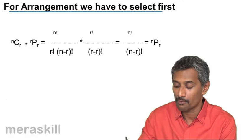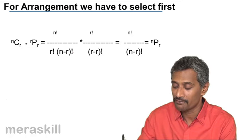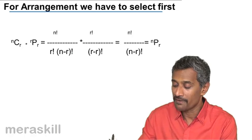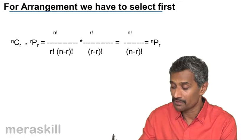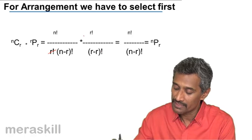nCr is n factorial upon r factorial into n minus r factorial. And rPr is r factorial upon r minus r factorial. So if you see over here, this gets cancelled.